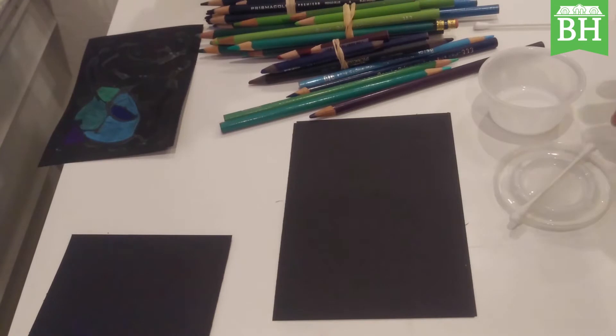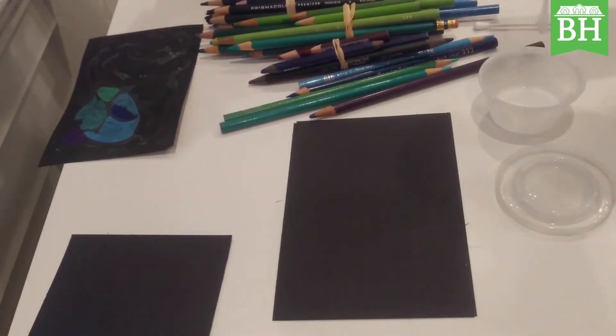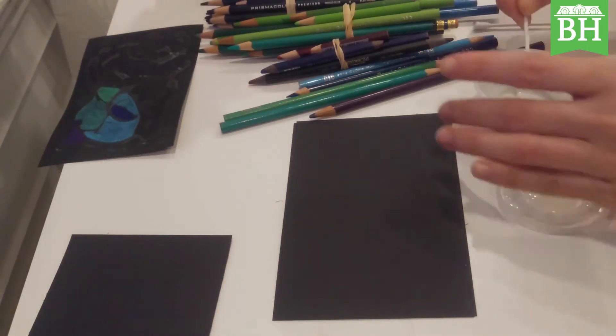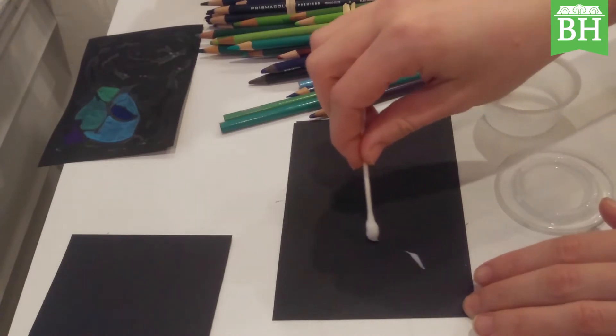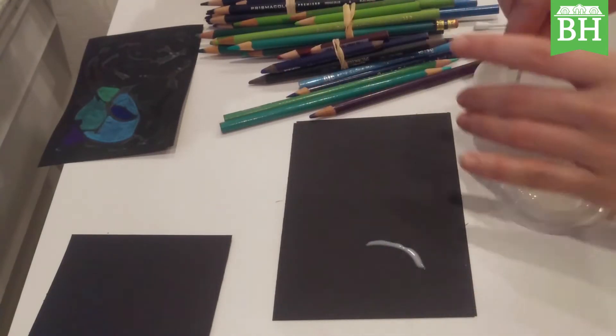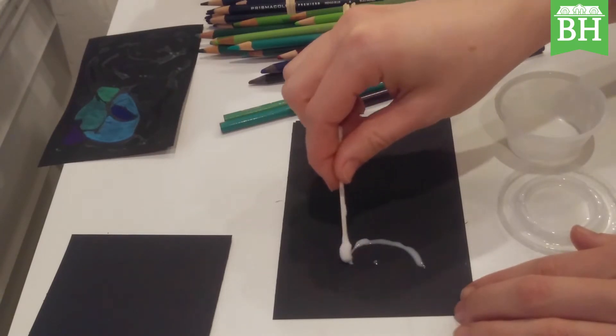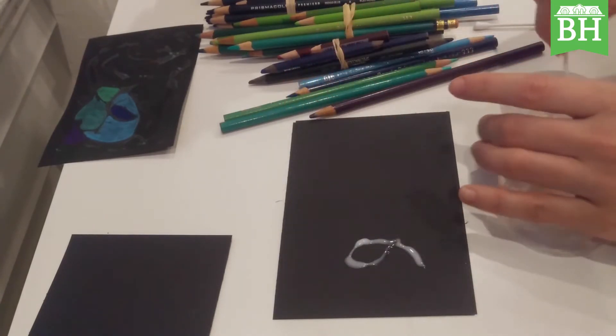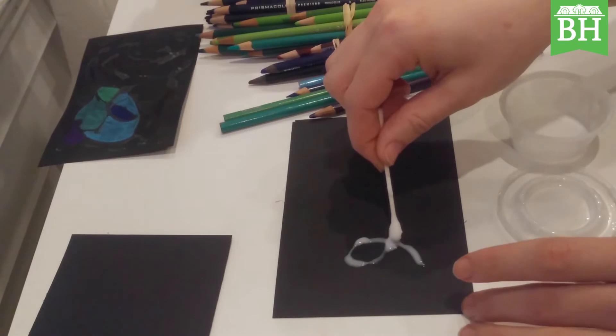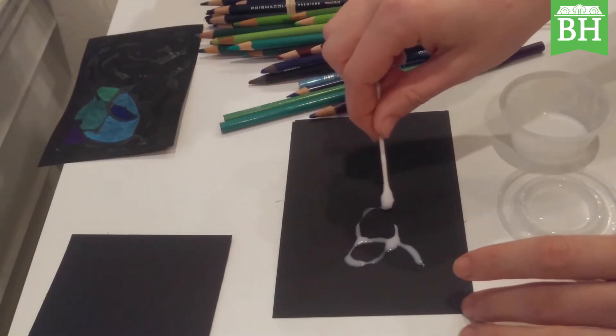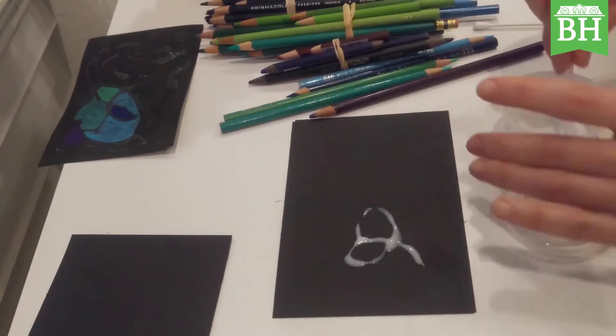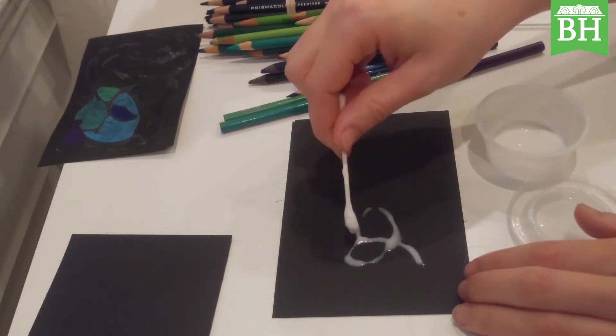First thing we're going to do is take our glue and draw whatever we want on our picture. You don't have to make it a drawing that's supposed to represent anything in particular. You could just make shapes, either geometric or organic shapes, but you can draw things with it. It's really whatever you want it to be.